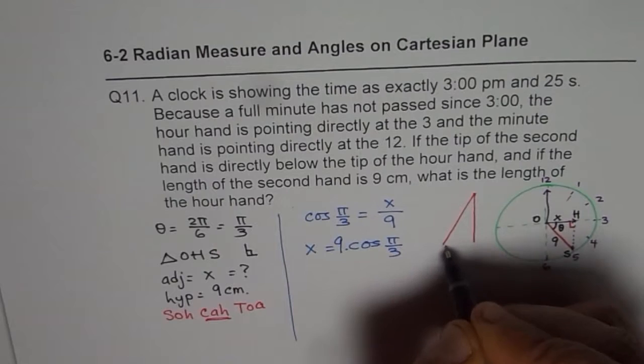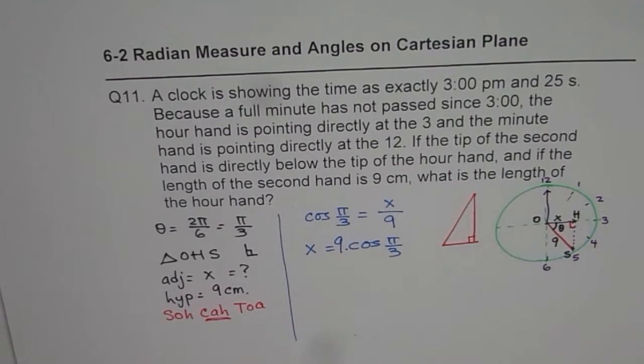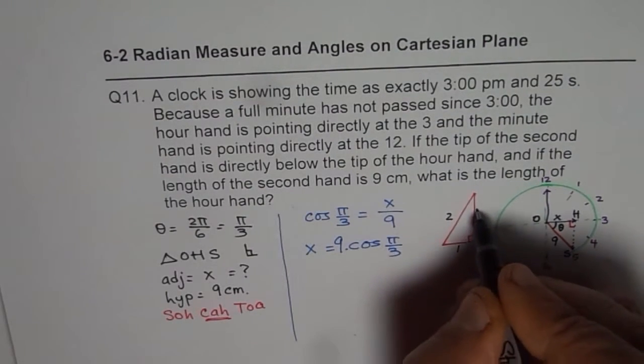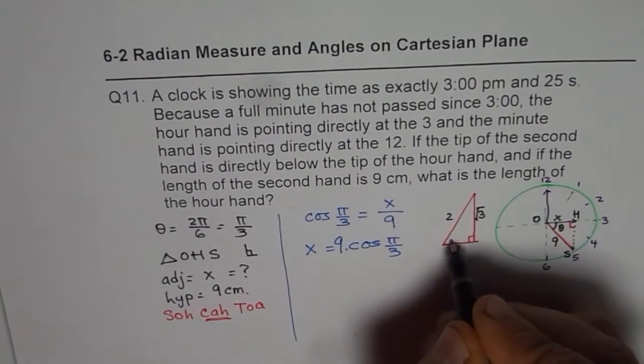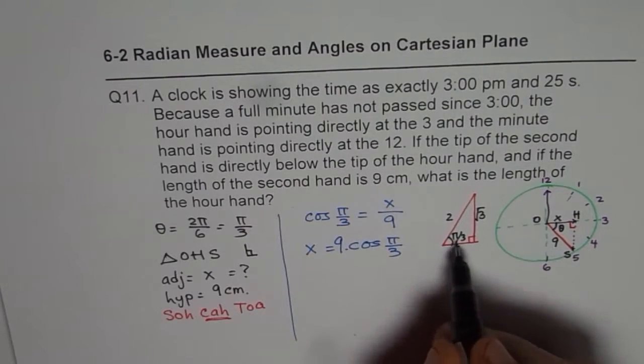You can draw 60, 30, 90 triangle. In 60, 30, 90 triangle, you know the size ratio is 1, 2 and square root 3 where this angle is pi by 3. So cos pi by 3 is half.